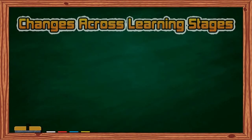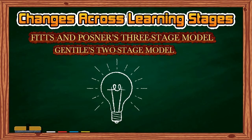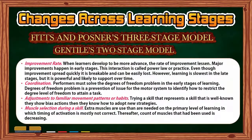Changes across learning stages. Both Gentile's and Fitts and Posner's models share similarities in how learners show certain characteristics as they progress through different stages. Regarding improvement rate: when learners become more advanced, the rate of improvement lessens. Major improvements happen in early stages — this interaction is called the power law of practice. Even though improvements spread quickly early on, they are fragile and can be easily lost. However, learning is slowest in the late stages but is powerful and likely to be retained over time.